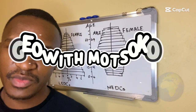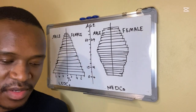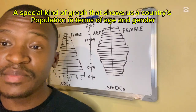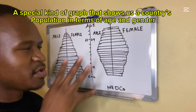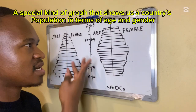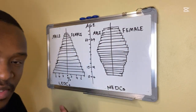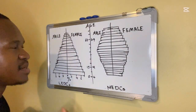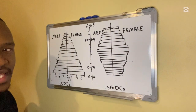Welcome to GeoB with Mozuku. In today's video we are covering the topic of population pyramids. A population pyramid is simply a special type of graph which shows us a country's population in terms of gender — whether the person is male or female.